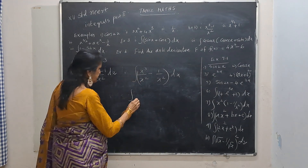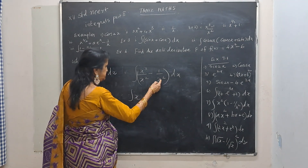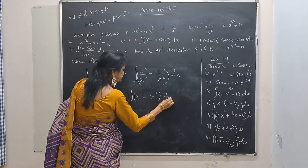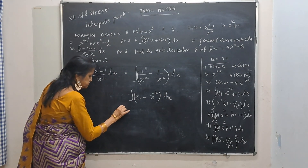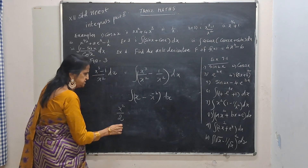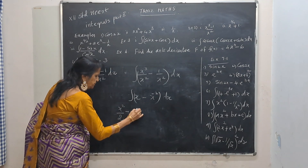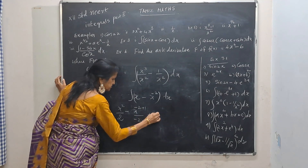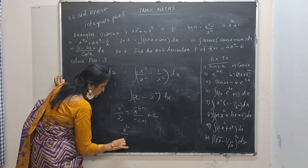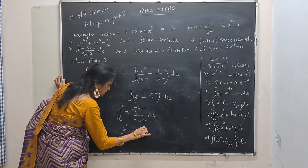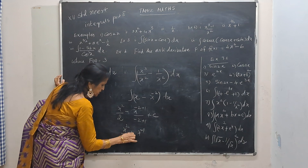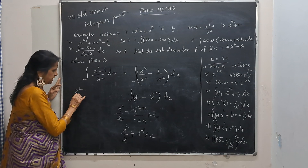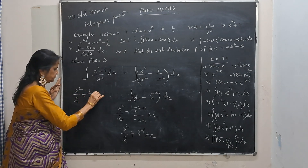Split it: integral of x cubed by x squared dx minus integral of 1 by x squared dx. Take 1 by x squared to the top as x to the power minus 2. This gives integral of x dx minus integral of x to the power minus 2 dx. This will be x squared by 2 minus x to the power minus 2+1 divided by minus 2+1, plus c. That is x squared by 2 minus x to the power minus 1. With the minus outside, this becomes x squared by 2 plus 1 by x plus c.